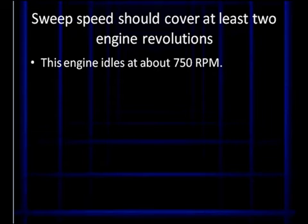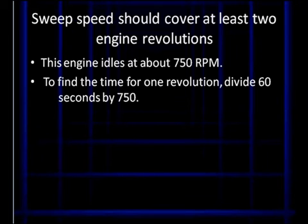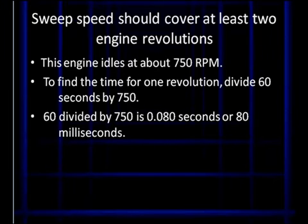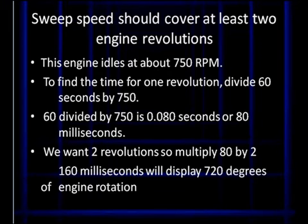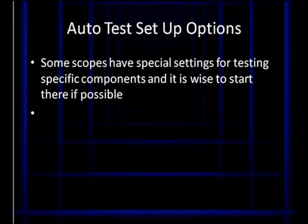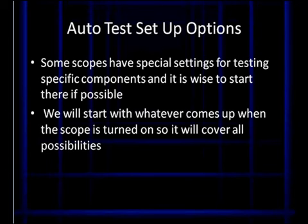This engine idles at 750 revolutions per minute. Let's break that down. If we divide 60 seconds by 750, we'll find how many revolutions we make in a second. In this particular case, it takes us 0.08 seconds to make a revolution. We want two engine revolutions, so multiply it by two. That gives us our 720 degrees of engine rotation. If we select a scope pattern like that, we'll get the right sweep rate. Now, a lot of scopes have auto-test setup options. There are special settings for testing specific components, and it's wise to start there if possible. But don't always count on them showing you everything you want to see. We're going to start with whatever comes up when the scope is turned on, and we're going to cover all possibilities in our example.